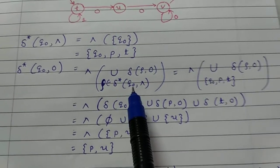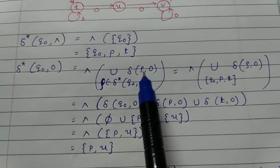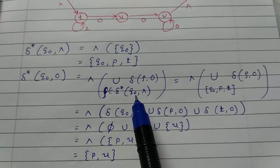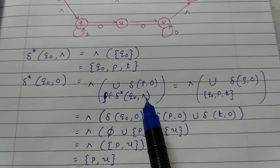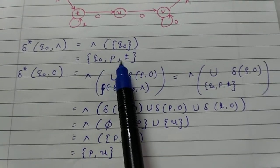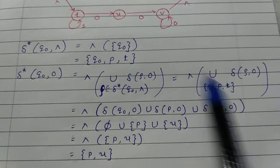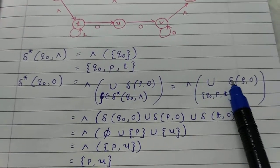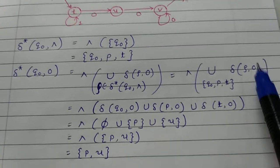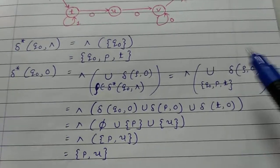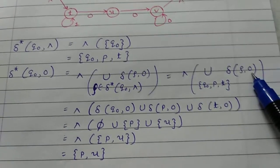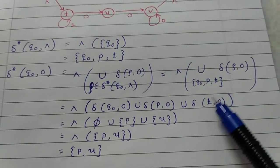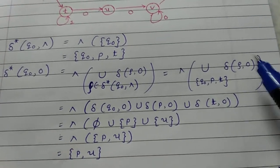Next, delta star of Q0 on input 0. For each state rho in delta star of Q0 on epsilon — which we already found is {Q0, P, T} — we compute delta(rho, 0). So find delta(Q0, 0) union delta(P, 0) union delta(T, 0).